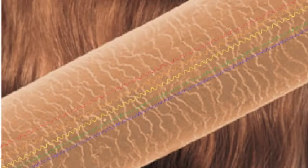Colours are made up of tiny little waves of light. This is a strand of hair. And these are the size of colour waves compared to the strand of hair. They are so small we can't see them with the naked eye.